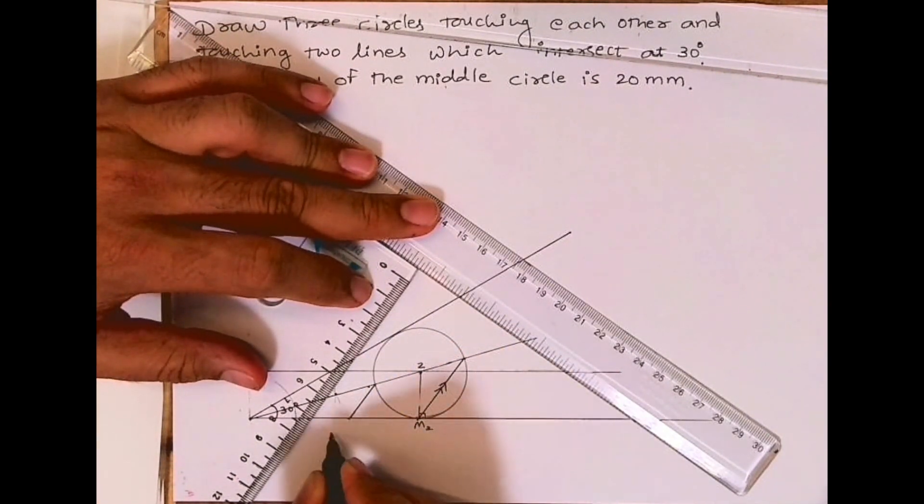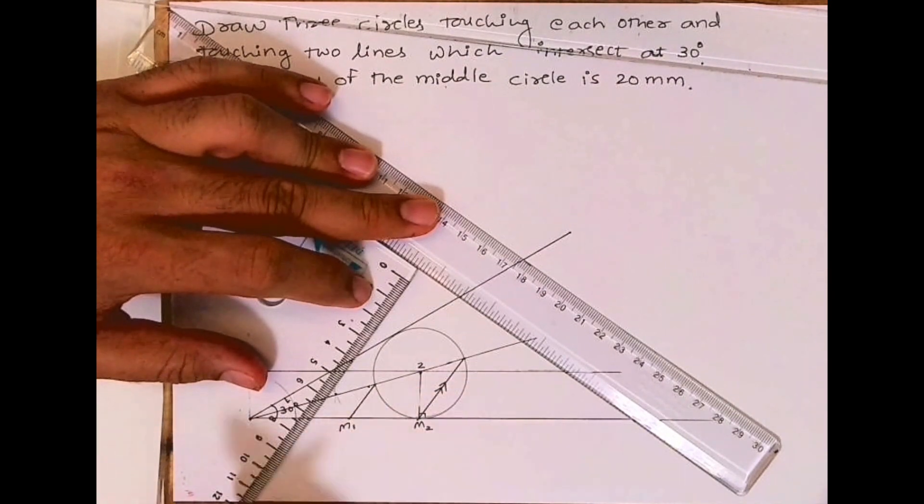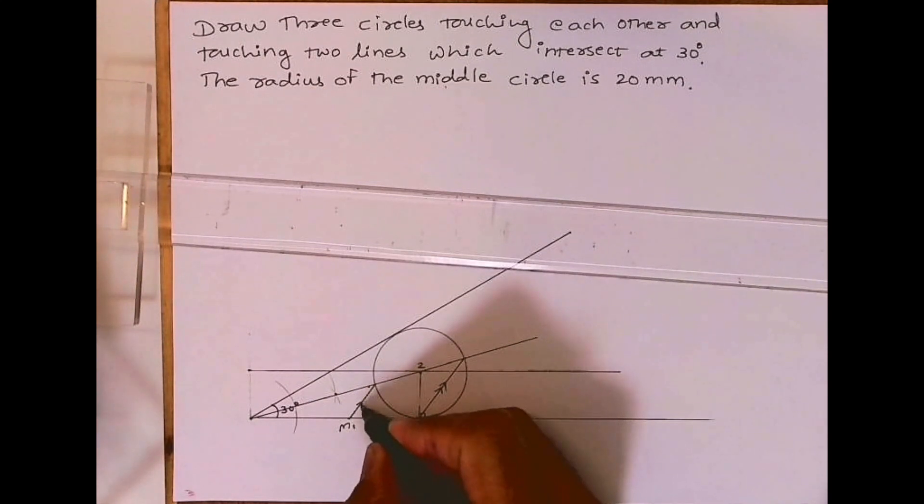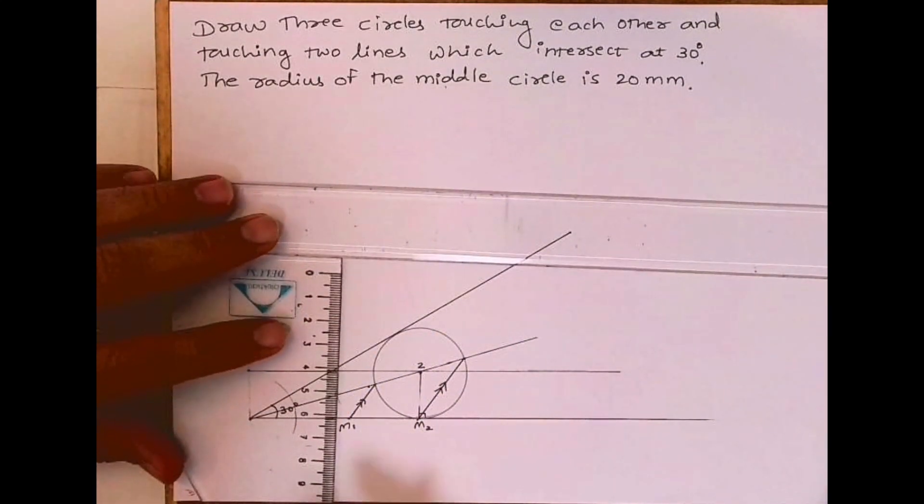Let's say this is M2, so this is M1. This is the parallel line.